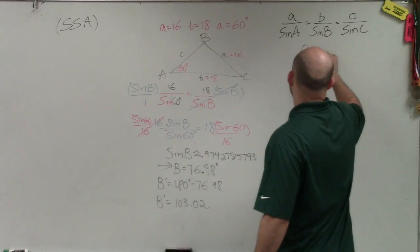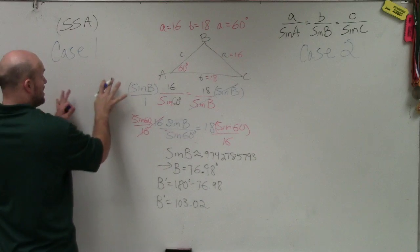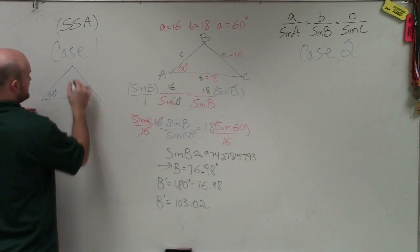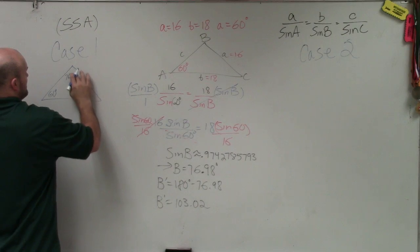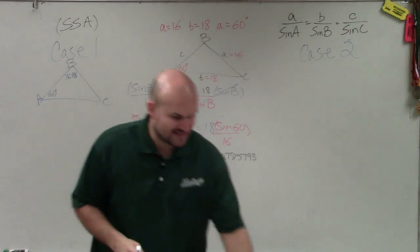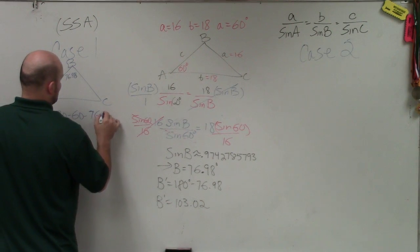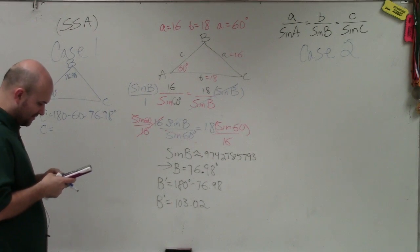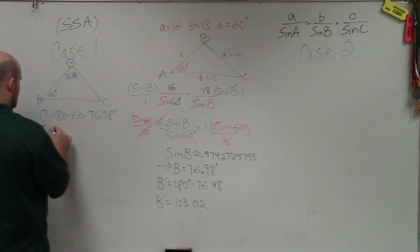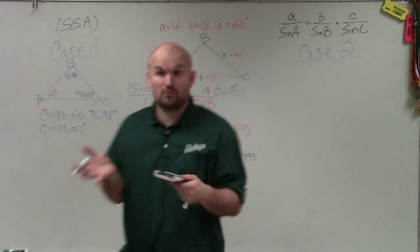So now I create two cases. Case one: angle A is 60 degrees and angle B is 76.98 degrees. To find angle C, I do 180 minus 60 minus 76.98, which gives me angle C equals 43.02 degrees. Since I can find a valid angle C, this triangle works — we have a valid triangle for case one.